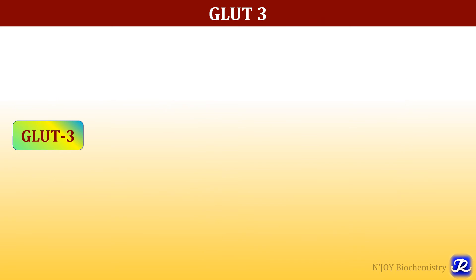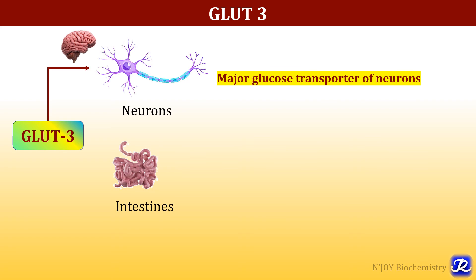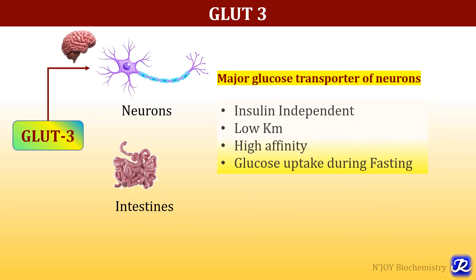GLUT 3 transporters are mainly expressed in neurons — they are the major glucose transporter of neurons — and can also be present in the intestine. They are insulin independent, have low KM and high affinity for glucose, and are therefore important for glucose uptake during fasting.